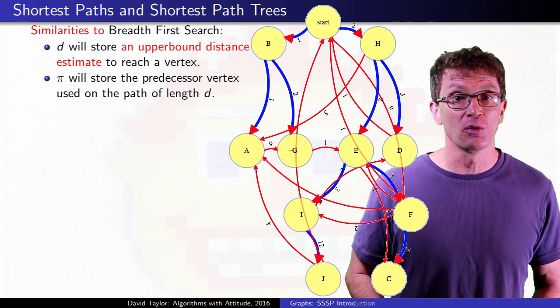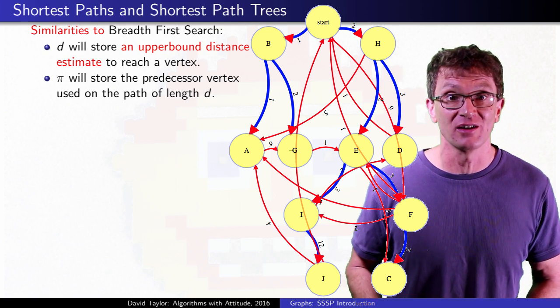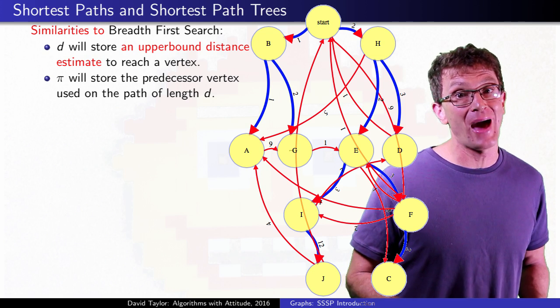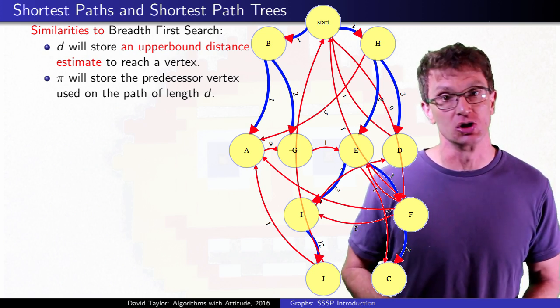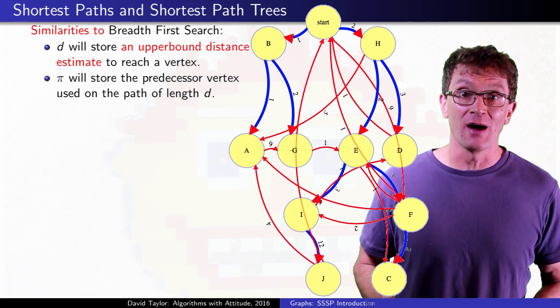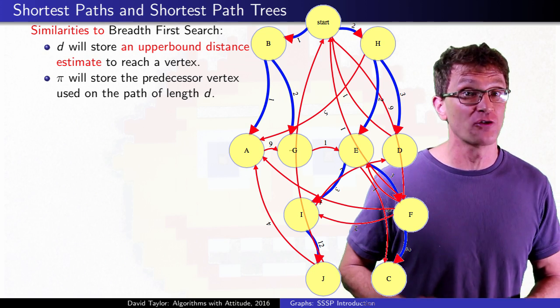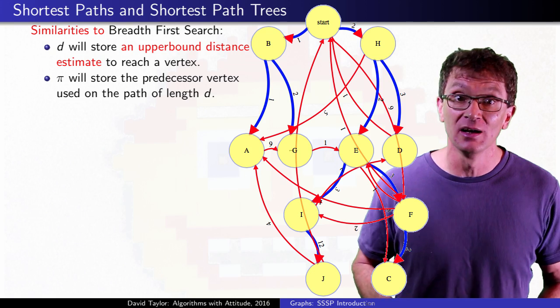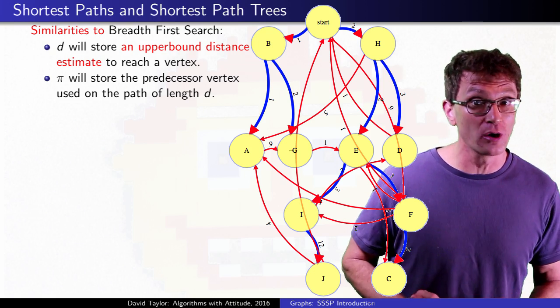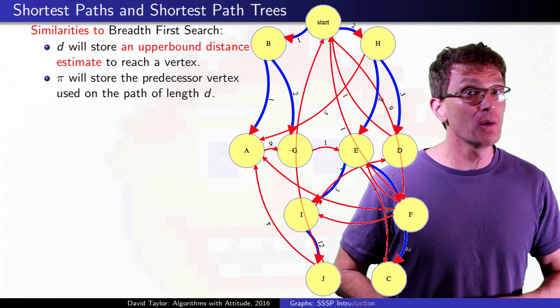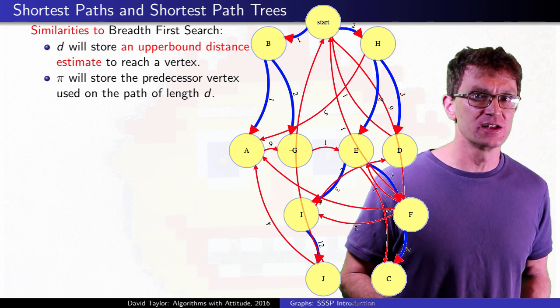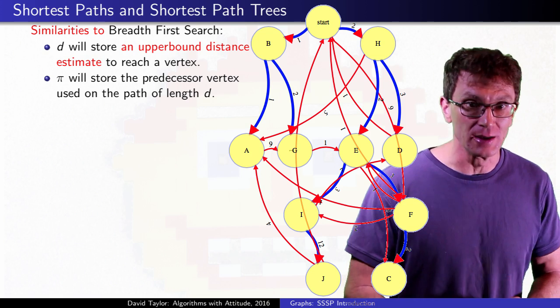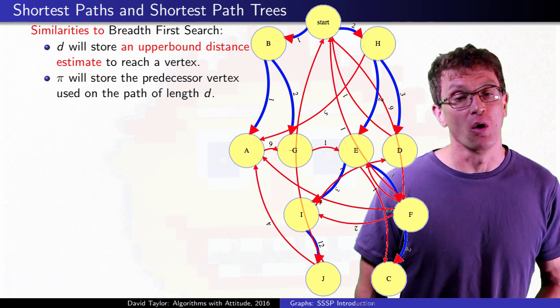The reason we can get away with storing just one predecessor node per vertex is because we use the same path to get to each node as we do to get through each node. So even though in this graph there are two different paths of cost 4 to vertex E, either through H or through B and G, we won't choose one of those paths to get to E and the other one to get to F through E. We use paths that form a tree.